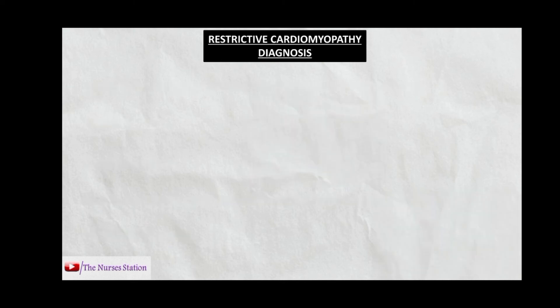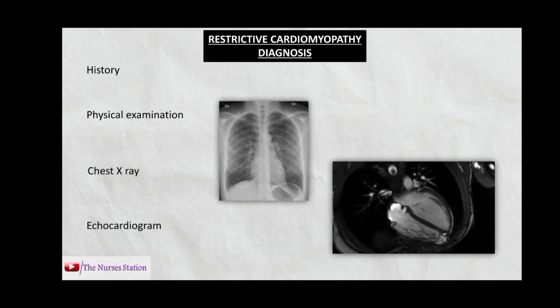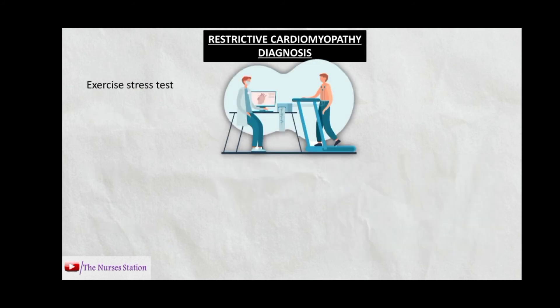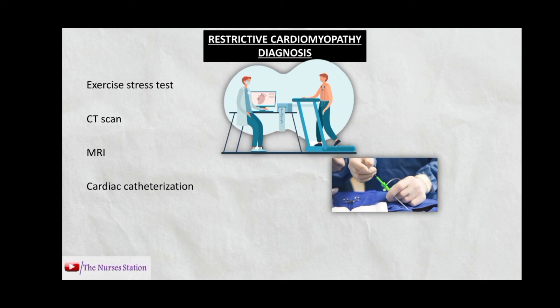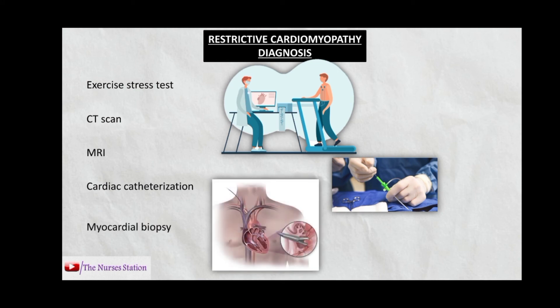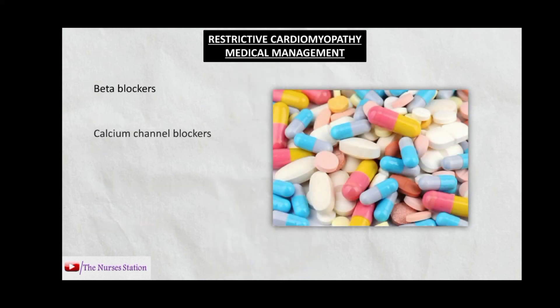Diagnosis of restrictive cardiomyopathy is based on history, physical examination, chest X-ray, echocardiogram, exercise stress test, CT scan of the heart, MRI, cardiac catheterization, and myocardial biopsy — in which a small portion of the myocardium is excised via catheter for diagnostic purposes. Medical management includes beta blockers, calcium channel blockers, endomyocardial stripping, and cardiac transplantation — particularly when there is primary cardiac amyloidosis with no evidence of systemic involvement.